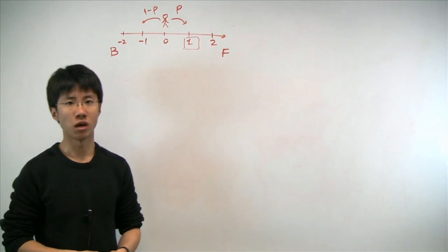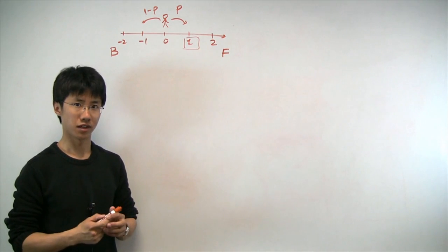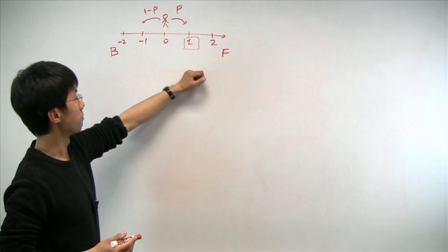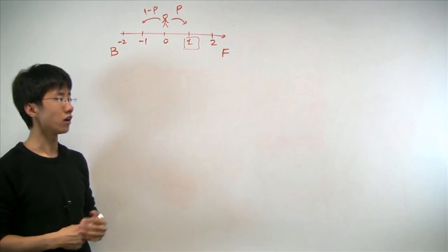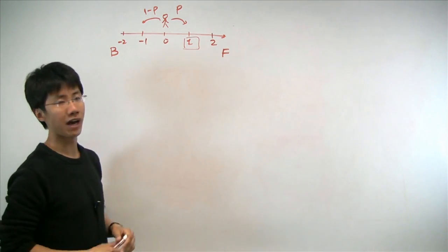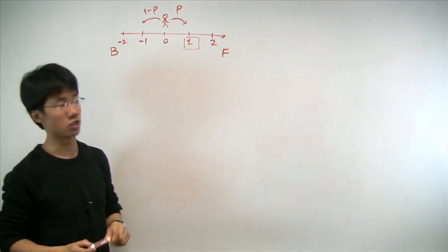In the second part of the problem, we're interested in the probability that after three steps, the person ends up in position 1 or one step forward compared to where he started. Now, the only possibilities here are that among the three steps, exactly two steps are forward and one step is backward, because otherwise there's no way the person will end up in position 1.